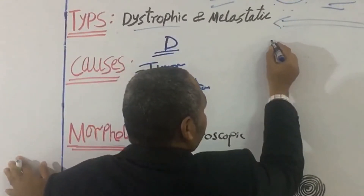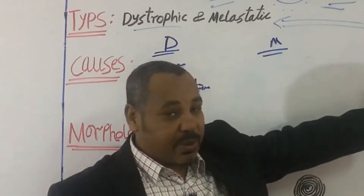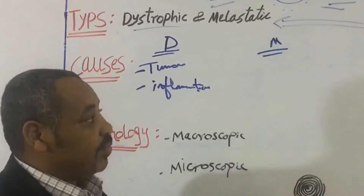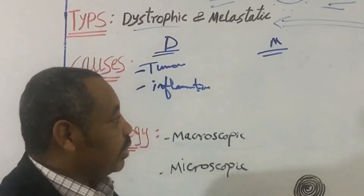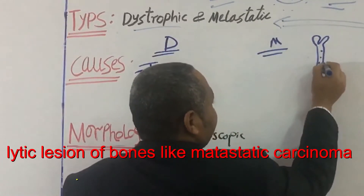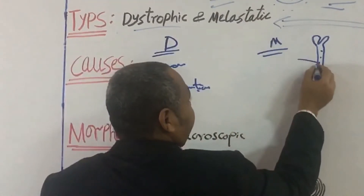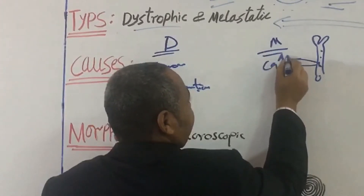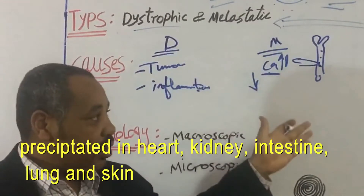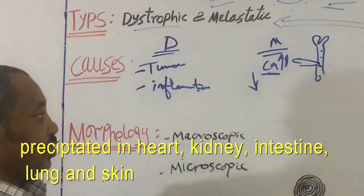For metastatic calcification, the main causes are hyperparathyroidism and multiple myeloma, and any condition in which there is a high level of calcium. For example, a lytic lesion due to a tumor in bone will cause release of calcium and phosphate from the bone, resulting in high serum calcium. This elevated calcium may then precipitate in specific tissues like the kidney, heart, or muscles. The most important concept here is hypercalcemia.